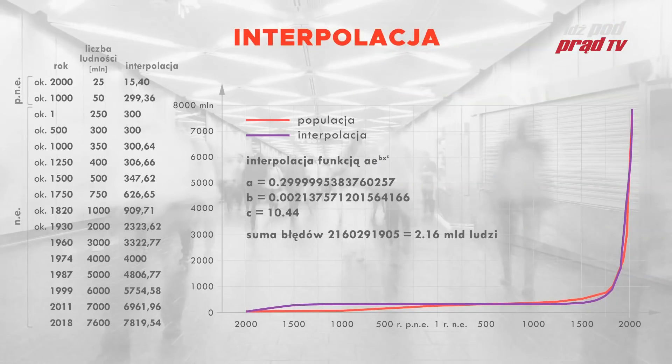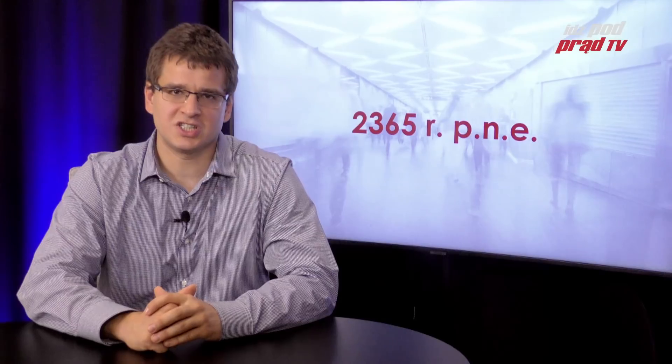Jednakże matematyczne obliczenia wskazują, że w roku 2365 przed naszą erą na Ziemi było — uwaga — tylko 8 osób. W niezwykły sposób potwierdza to biblijny opis, który mówi, że stworzenie świata nastąpiło około 4 tysięcy lat przed Chrystusem, a Bóg zesłał potop w roku 1656 po stworzeniu, czyli około roku 2344 przed naszą erą.